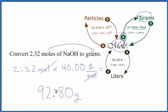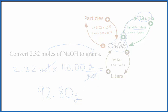So to recap: changing from moles to grams, we found the molar mass for the sodium hydroxide, we multiplied moles times that molar mass, moles canceled out, and left us with grams. This is Dr. B, and thanks for watching.